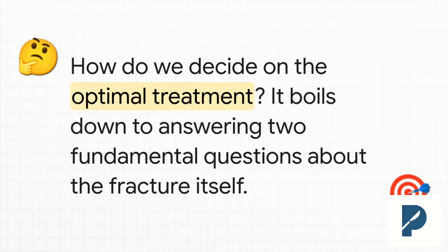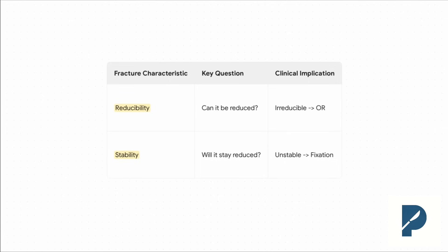So how do we actually preserve that motion? Our entire decision tree boils down to answering two simple, fundamental questions about the fracture itself. Question one: can you actually reduce it? If the answer is no, the patient's going to the OR. If you can reduce it, you ask question two: is it stable? Can you maintain that reduction? If it's just going to fall apart, that's an unstable fracture and it needs fixation. Reducible and stable — you're good. Irreducible or unstable — you've got work to do.